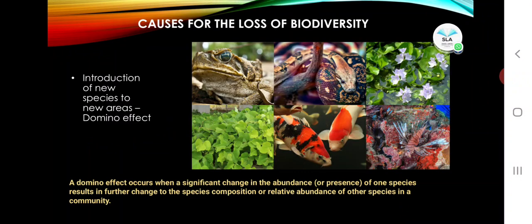Introduction of new species to new areas — also called the domino effect or dodo bird effect in class. Exotic species are otherwise called alien species or foreign species. They are non-native species introduced to an area. They pose a threat to endemic species because they face no threat from their natural enemies such as predators or parasites.